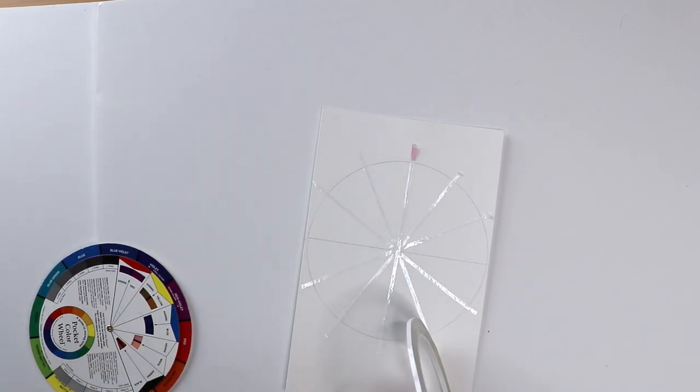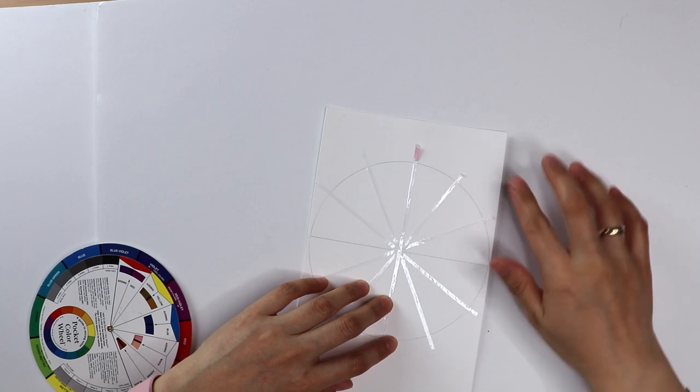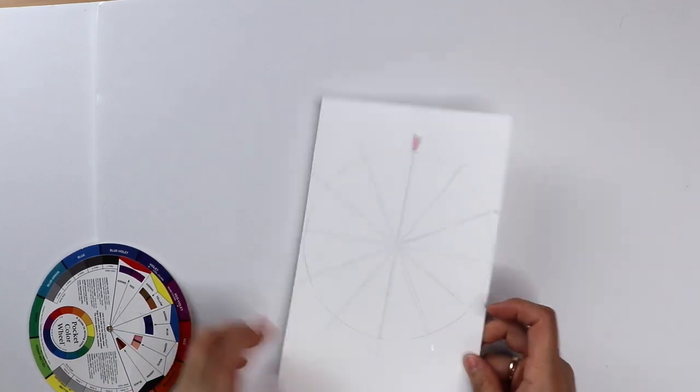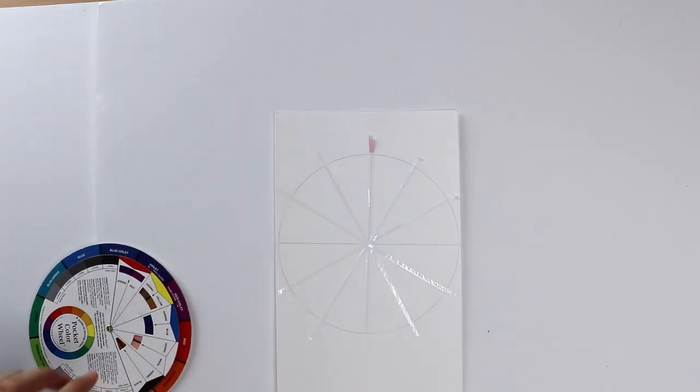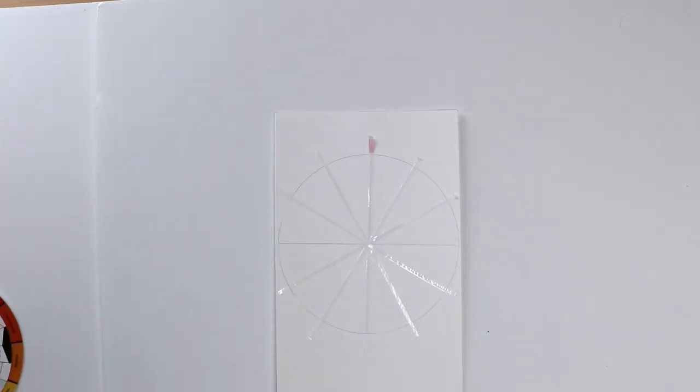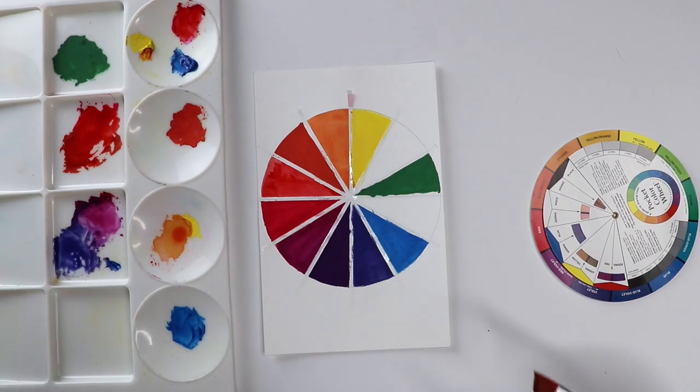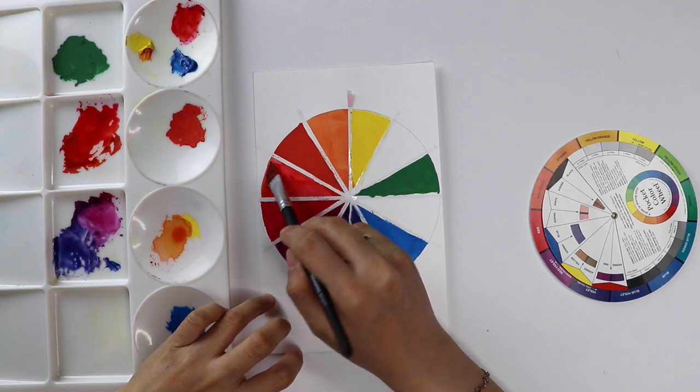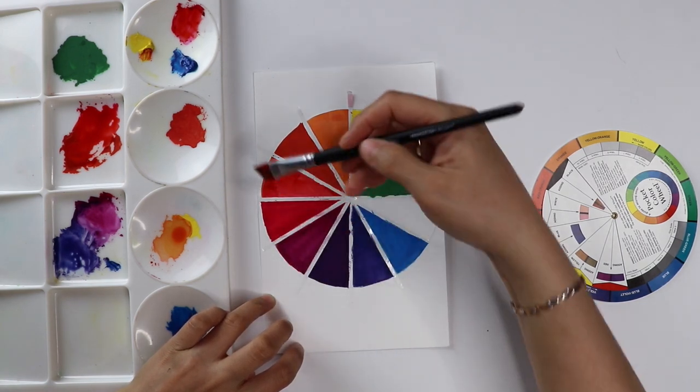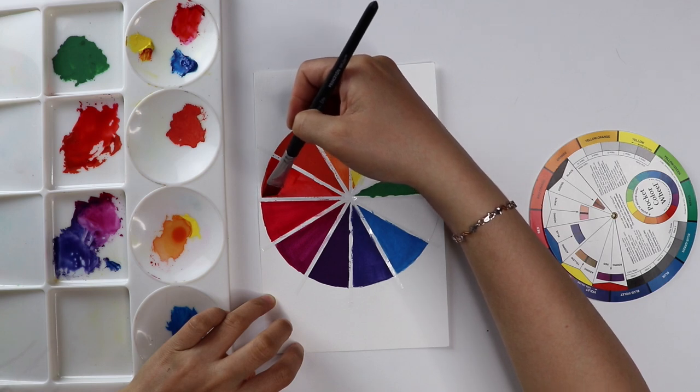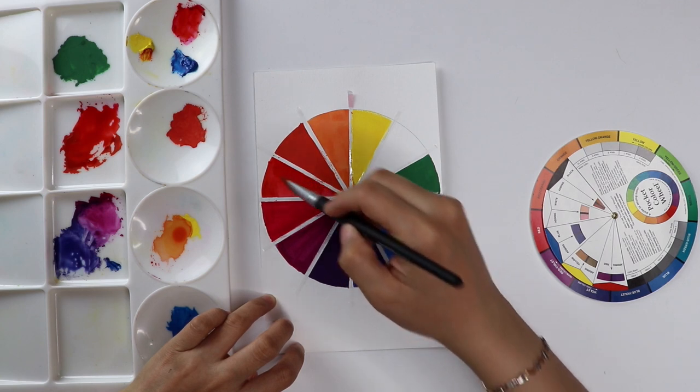The next step is to fill the color wheel using the three primary colors. The three primary colors are yellow, red, and blue. In traditional watercolor paintings, people would use cadmium yellow, cadmium red, and ultramarine. Here I'm actually using Winsor and Newton gouache pigments: primary red, primary yellow, and primary blue.